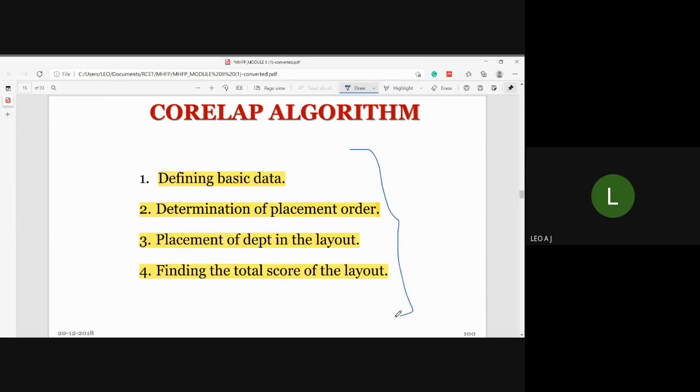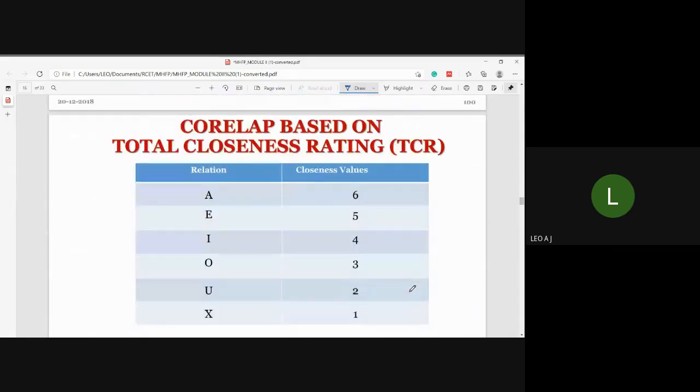Third, placement of departments in the layout - placing each department in the layout. Fourth, finding the total score of the layout based on the relationship chart to determine the final layout score.